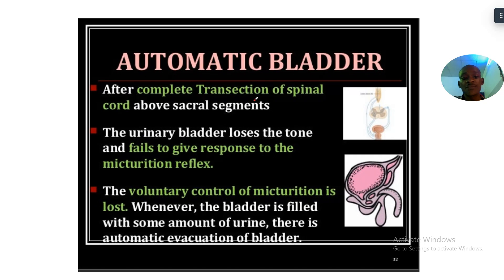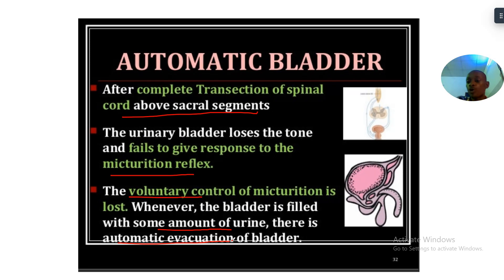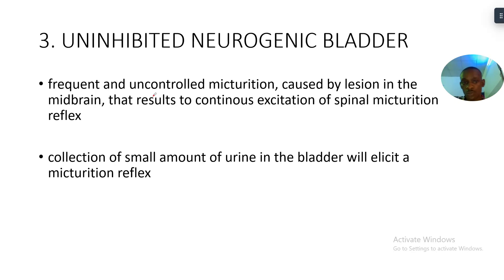After complete transection of the spinal cord above the sacral segment, the urinary bladder loses tone and fails to respond to micturition reflex. Voluntary control of micturition is lost. Whenever the bladder is filled with even small amounts of urine, there is automatic evacuation — as urine comes in, it passes out. That is the automatic bladder; there is no voluntary control.